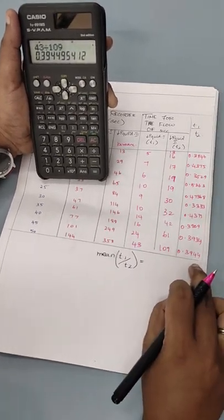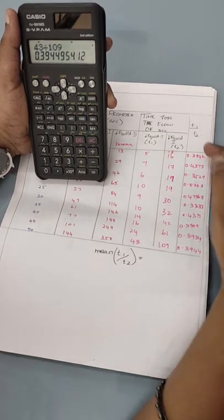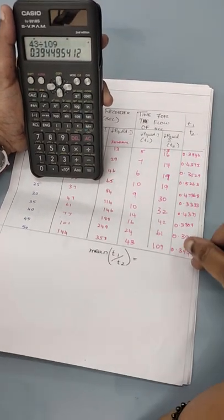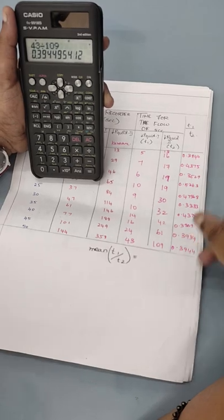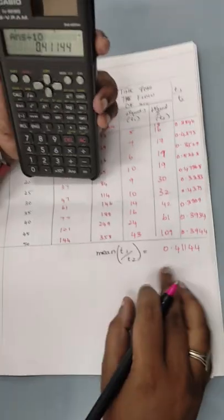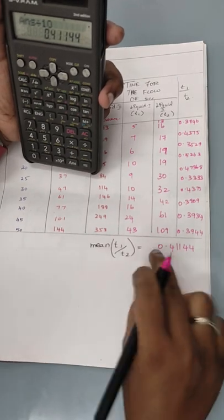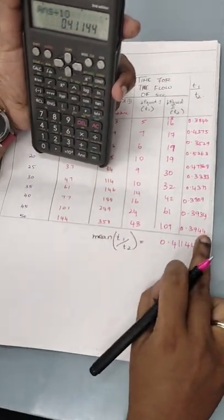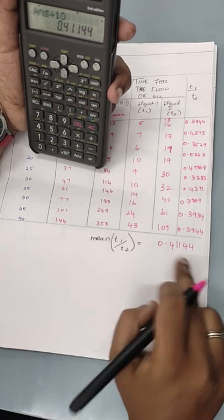We will take mean for these values. Totally I have 10 values. I add all these values divided by 10 will be the mean t1 by t2. This is the mean value what I obtained. By adding all this number and divided by 10, I got this value.